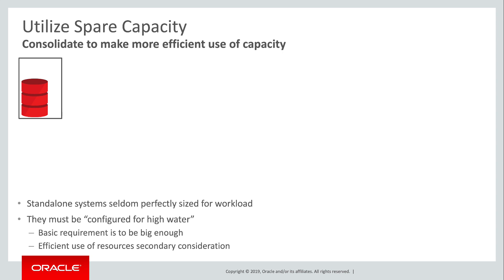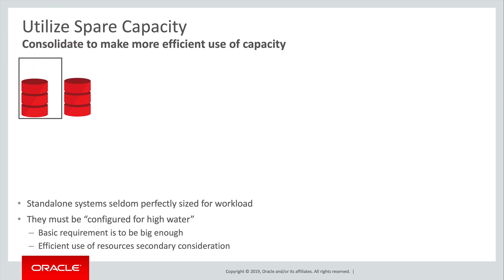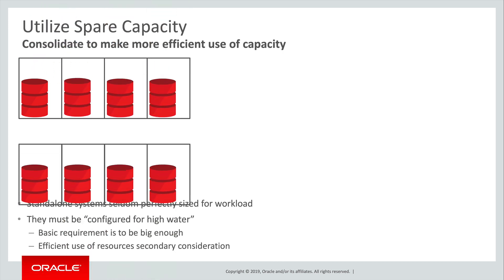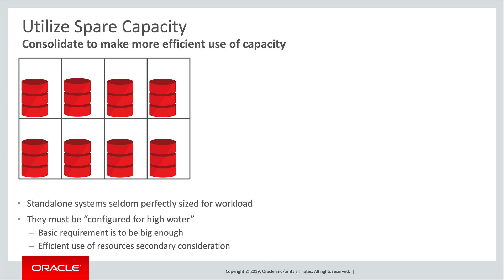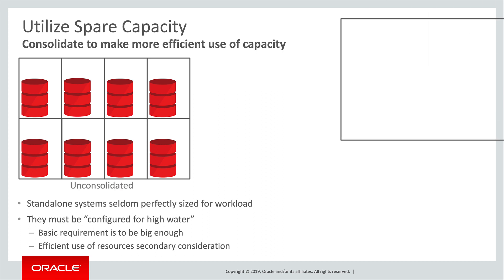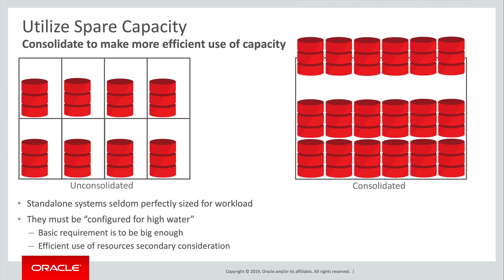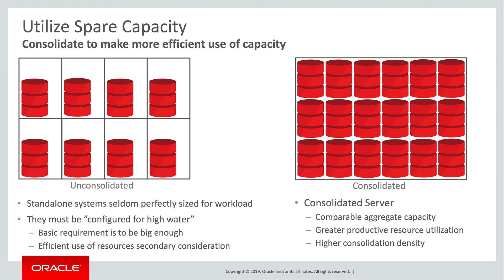As a result, servers, like cars, tend to carry excess capacity. Considering a large number of these systems in aggregate, the excess capacity adds up to quite a lot. In a consolidated environment, with a single large server of comparable aggregate capacity, many more application databases can be supported.